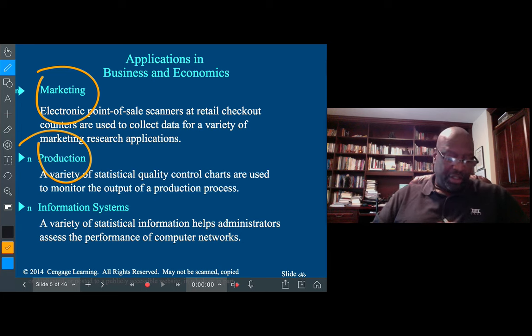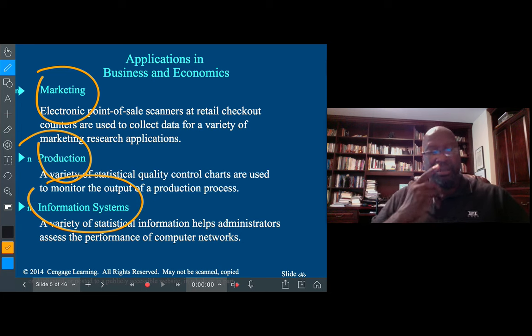In production, we want to look at production output, whether processes are productive, whether we're producing defective products. Quality data is important. In information systems, a variety of information is used by administrators to help with making decisions. If you're analyzing computer networks, you look at things like runtime, downtime, and crashes.